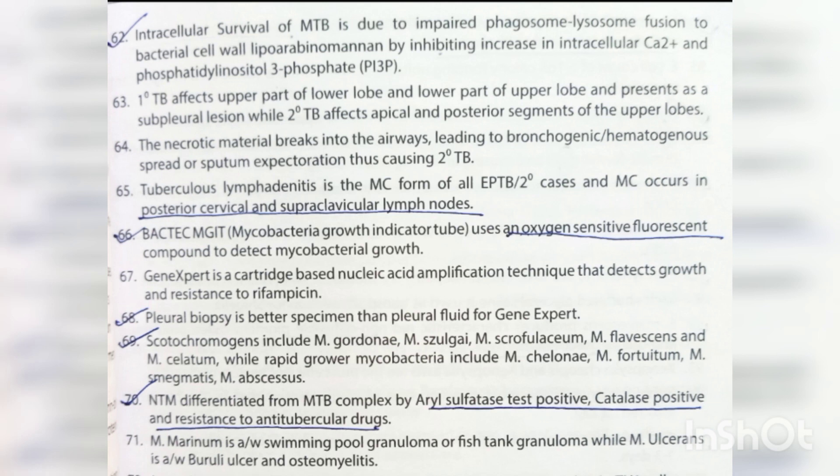Secondary TB affects apical and posterior segments of the upper lobes. The necrotic material breaks into the airways, leading to bronchogenic, hematogenous spread, or sputum expectoration, causing secondary TB. Tubercular lymphadenitis is the most common form of extra-pulmonary TB, occurring most commonly in posterior cervical and supraclavicular lymph nodes. BACTEC MGIT uses an oxygen-sensitive fluorescent compound to detect mycobacterial growth. GeneXpert is a cartridge-based nucleic acid amplification technique that detects growth and resistance to rifampicin; pleural biopsy is a better specimen than pleural fluid for GeneXpert.